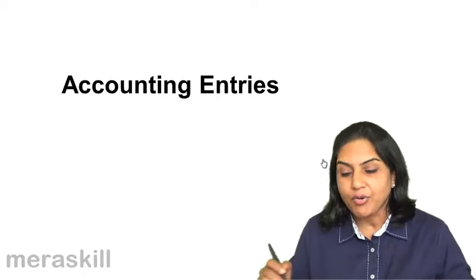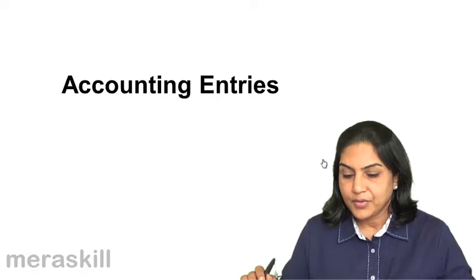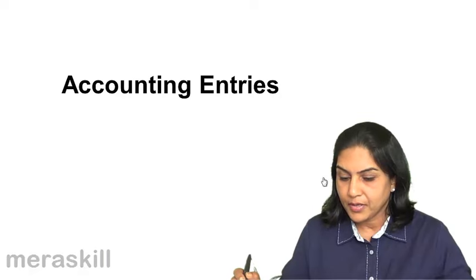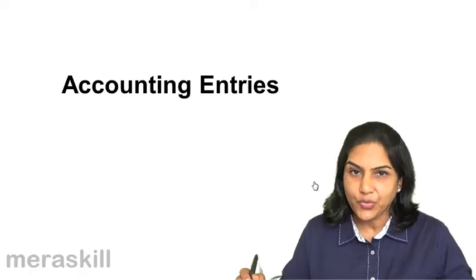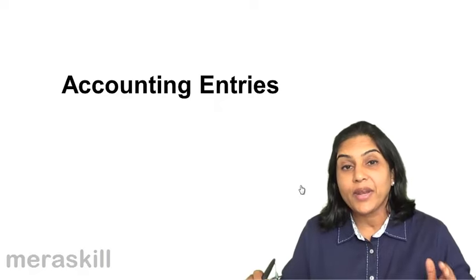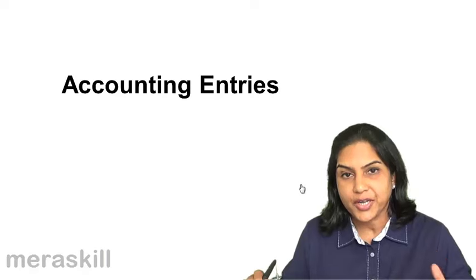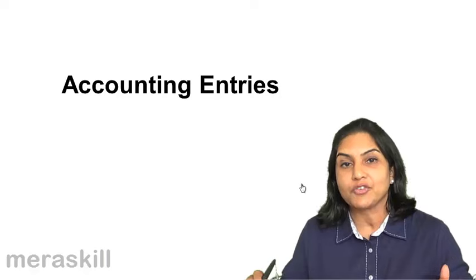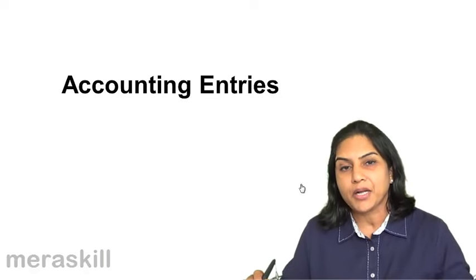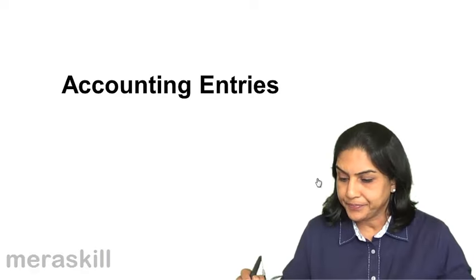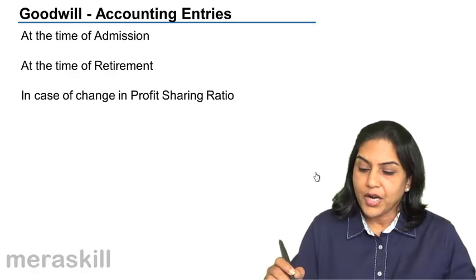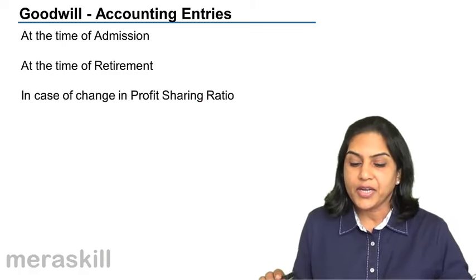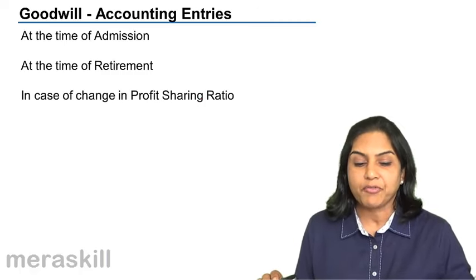Let us discuss the accounting entries with respect to goodwill under different situations. The valuation of goodwill normally arises whenever there is a change in the profit sharing ratio, which may be because of a changed ratio, the admission of a partner, the retirement of a partner, or the death of a partner. Accounting entries arise at the time of admission, retirement, or change in the profit sharing ratio.